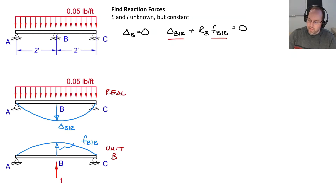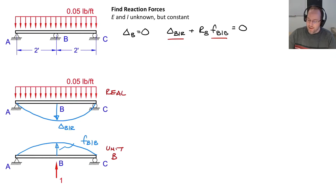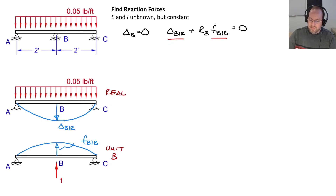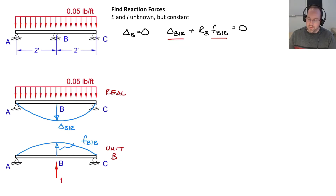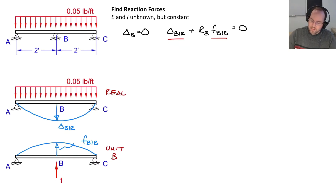We can find those two displacements using the principle of virtual work, which is convenient since we already have a unit load system and the real system. But in this case we just have a simply supported beam with either a distributed load or a point load at mid-span, so we can look up these displacements in a table.